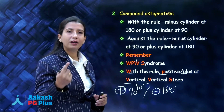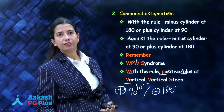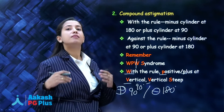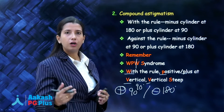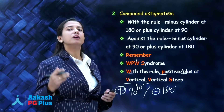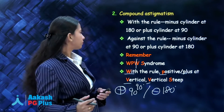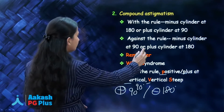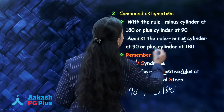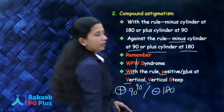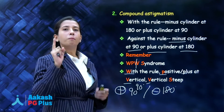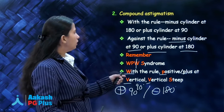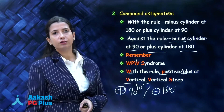Against the rule astigmatism is just the opposite — the horizontal meridian is steeper, more curved, refracting more. So it will be exactly opposite: in against the rule astigmatism, you will have minus at 90 or plus at 180. Plus at 90 is with the rule; minus at 90 is against the rule.